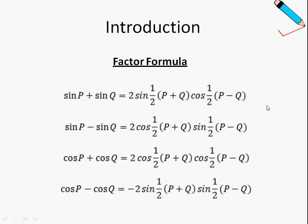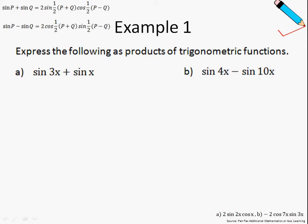Without further ado, let us look at some tangible examples. In example 1a, we are asked to express the following as products of trigonometric functions: sine 3x plus sine x. If we stare at this carefully, this is in the form of the first Factor Formula highlighted in yellow. We first identify our parameters: P is 3x, and Q is x.